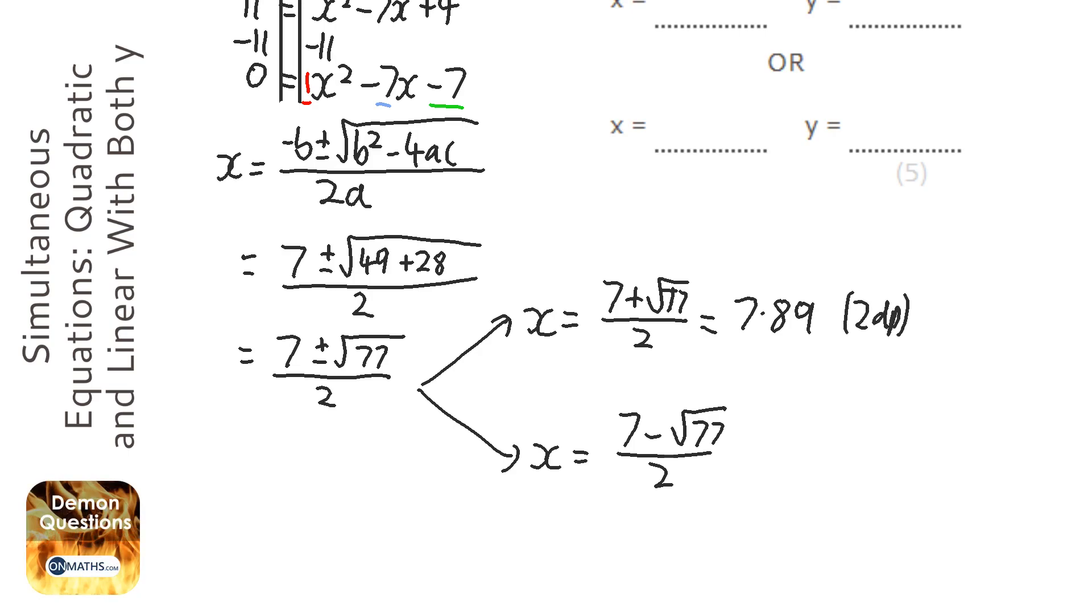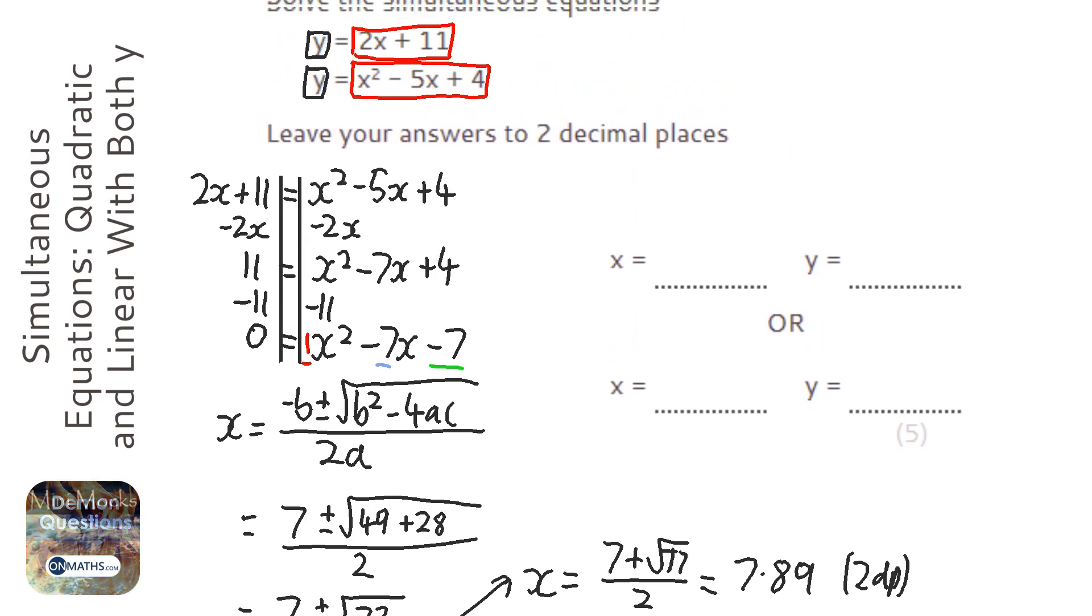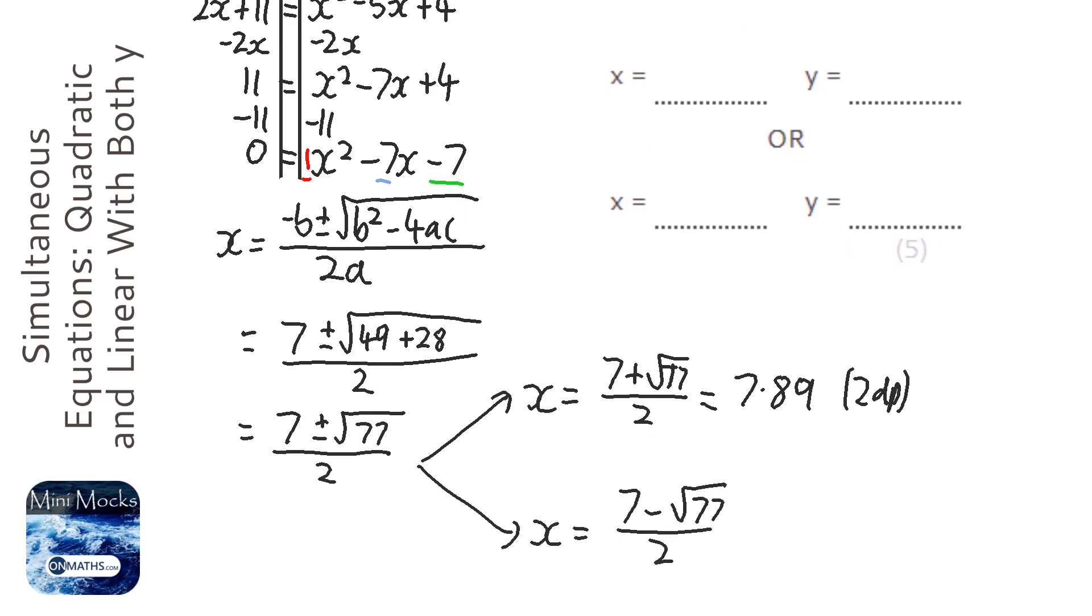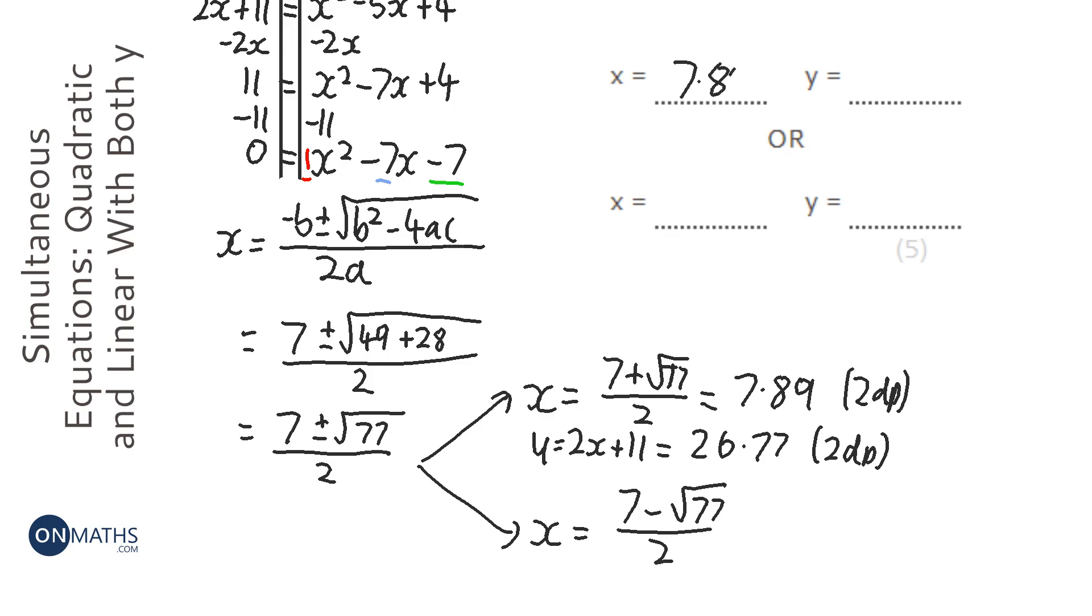Now, at this point, it's still in my calculator. I don't want to get rid of it, because I need to also find out what y is. Now, it says y equals 2x plus 11. So y equals 2x plus 11, which equals 2 times this value in my calculator plus 11. So I'm going to times this by 2 plus 11, and it gives me the answer of 26.77 to two decimal places. And those are my answers for now. And y is 26.77.